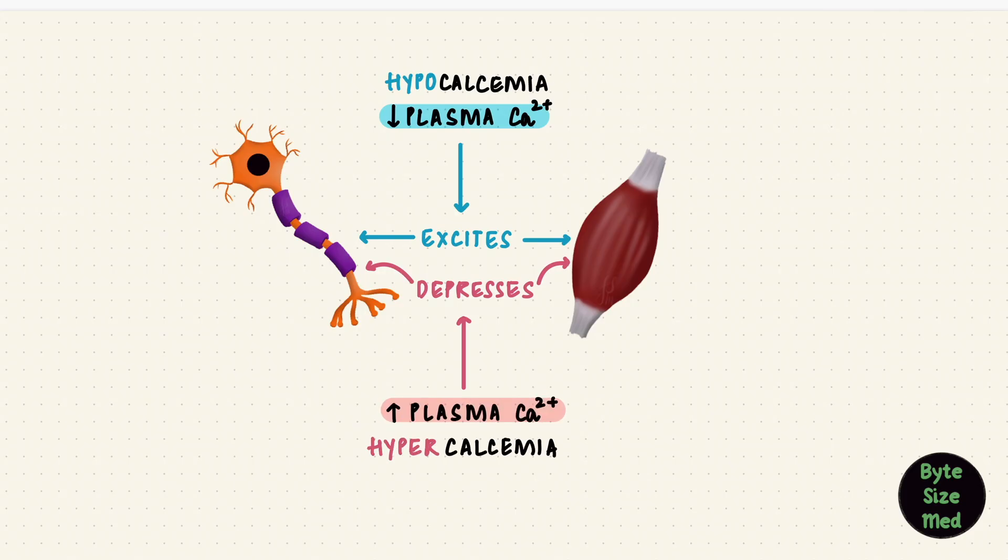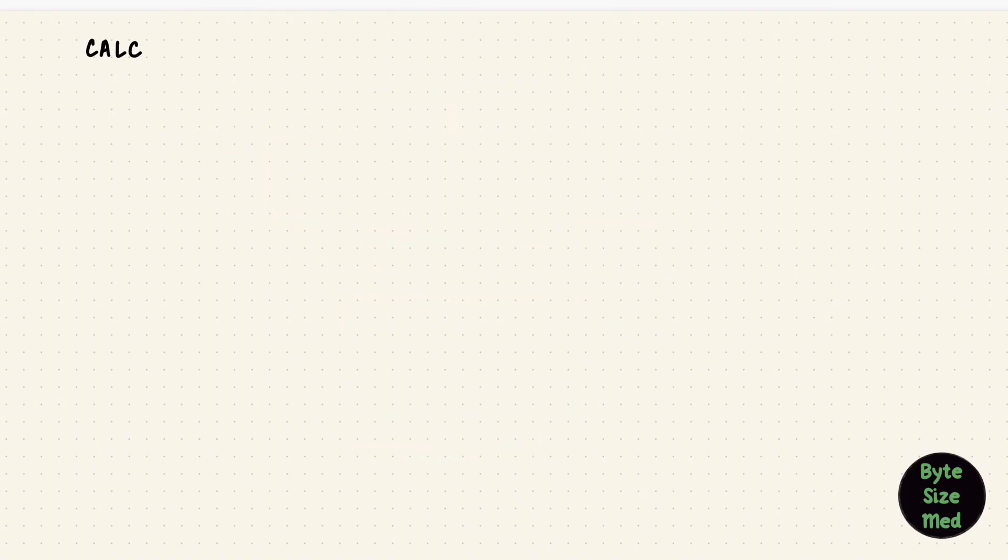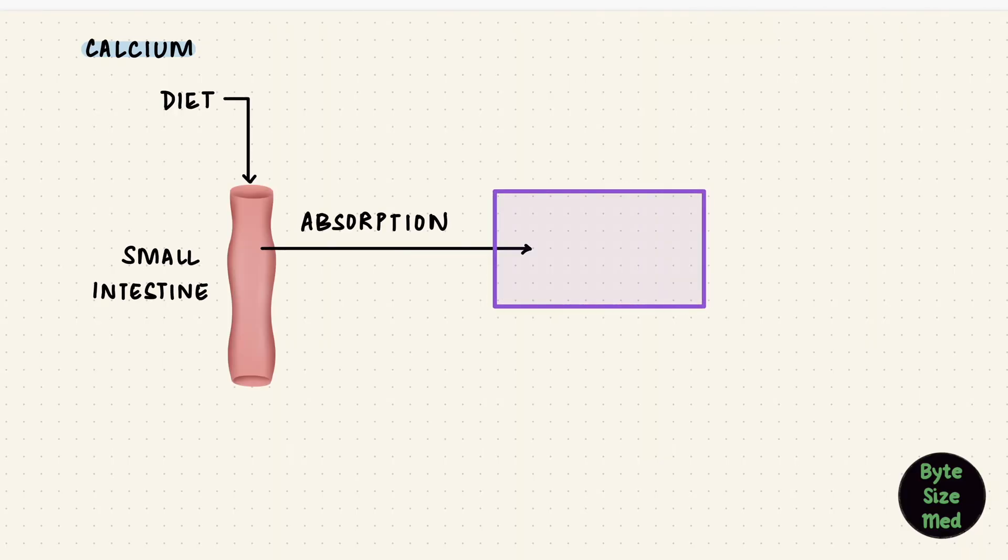So calcium has to be well regulated to stop things like that from happening. How? Well, how do you get calcium? Through diet. It reaches the intestines where it gets absorbed. GI secretions add some calcium back into the lumen. But when it gets absorbed, it gets into the extracellular fluid. It can exchange with cells, so that's the intracellular fluid. Calcium can enter cells, calcium can leave cells to perform its functions.